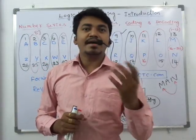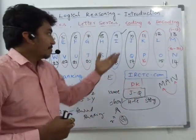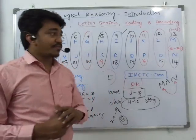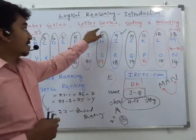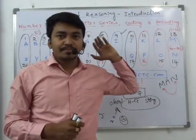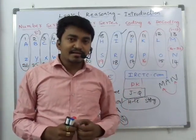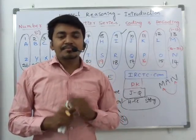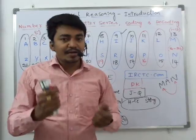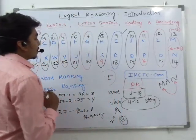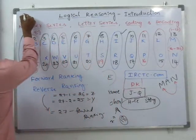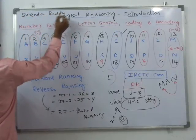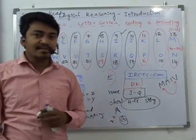So these are the concepts — opposite ranking, opposite pairs, and reverse ranking — which we can use to work out questions in number series, letter series, and coding and decoding. In my next video on logical reasoning, you can see how to apply these concepts. Hope you guys enjoyed the session. Please subscribe to my YouTube channel for more such videos. Thank you, have a nice day.